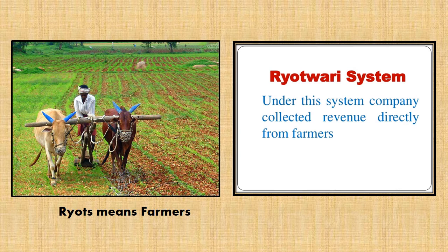In the south, where the Mughals didn't really rule, the zamindari system was not strong. Thus, the British used the ryotwari system. Ryots means farmers, and in this new system, farmers directly paid their taxes to the government through collectors.